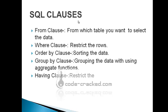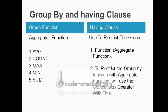Hello everyone, it's Meeth again. Today we discuss the GROUP BY clause and HAVING clause. We have already discussed FROM clause, WHERE clause, and ORDER BY clause in the previous video. GROUP BY uses aggregate functions like average, count, max, minimum, and sum. HAVING clause is used to restrict the group of functions using aggregates with comparison operators.